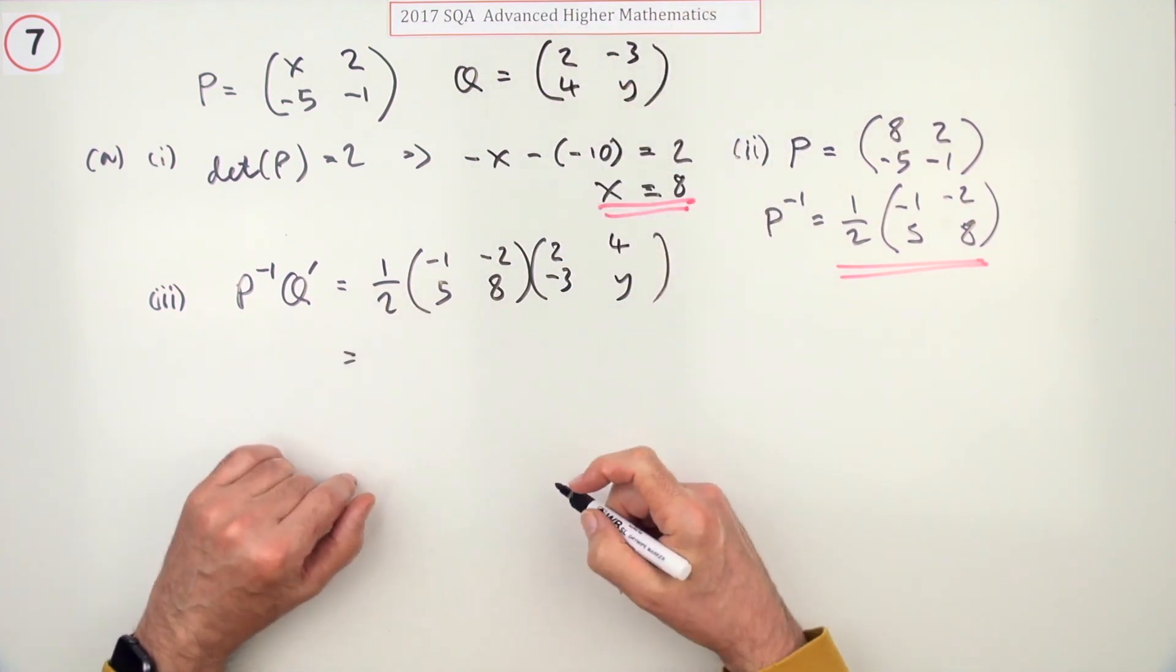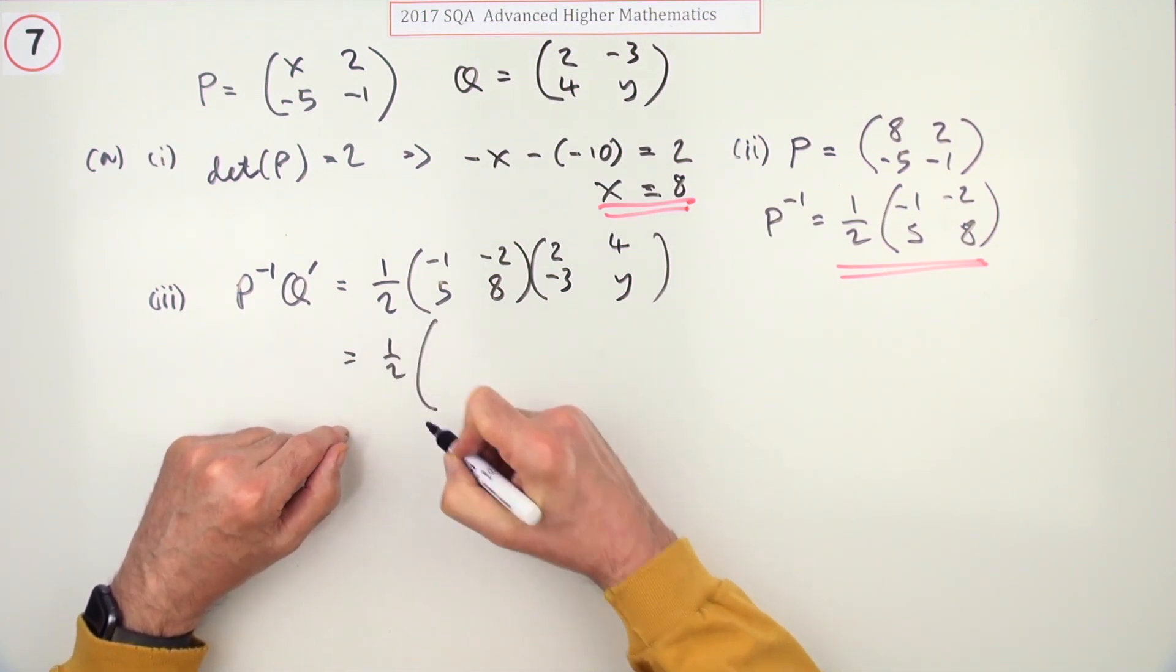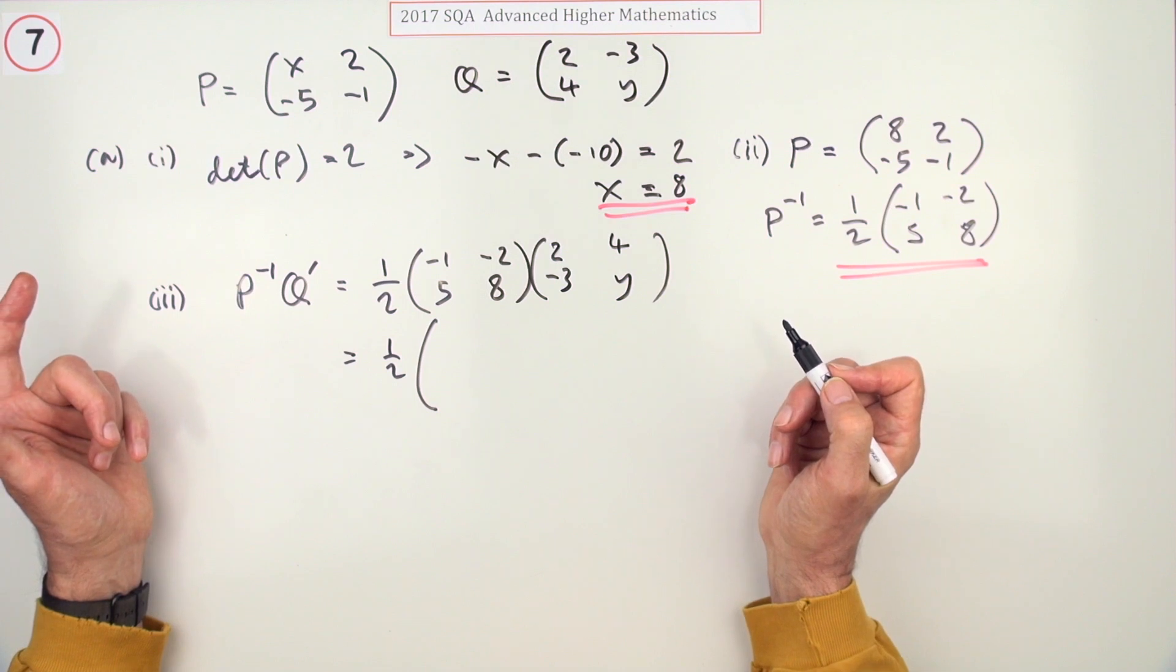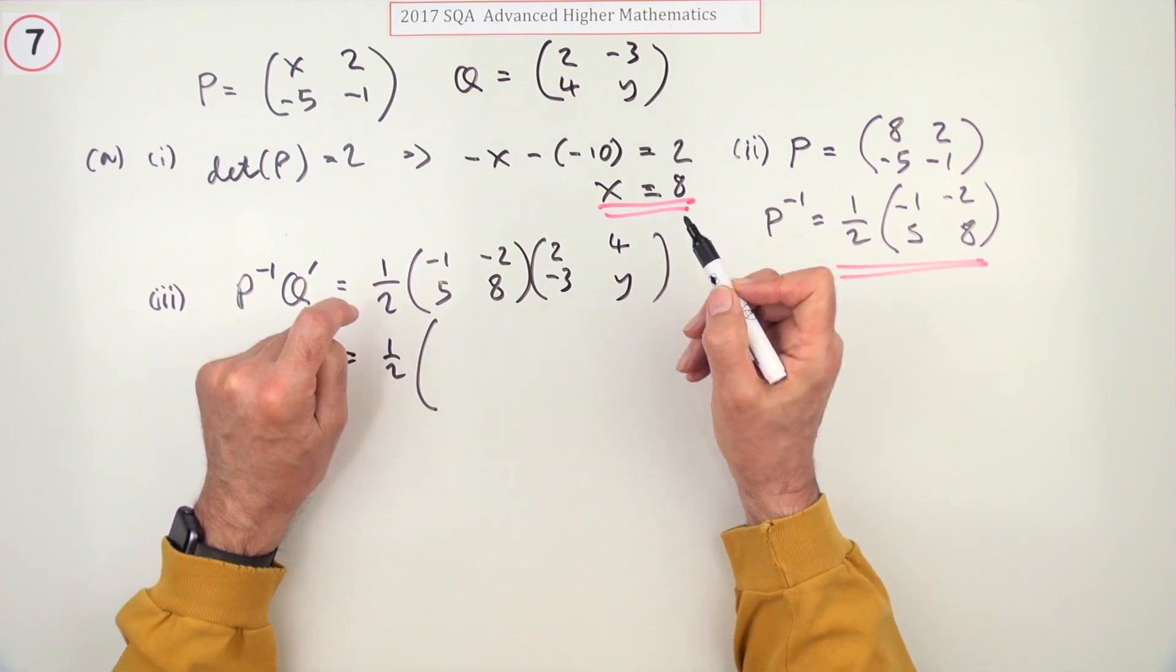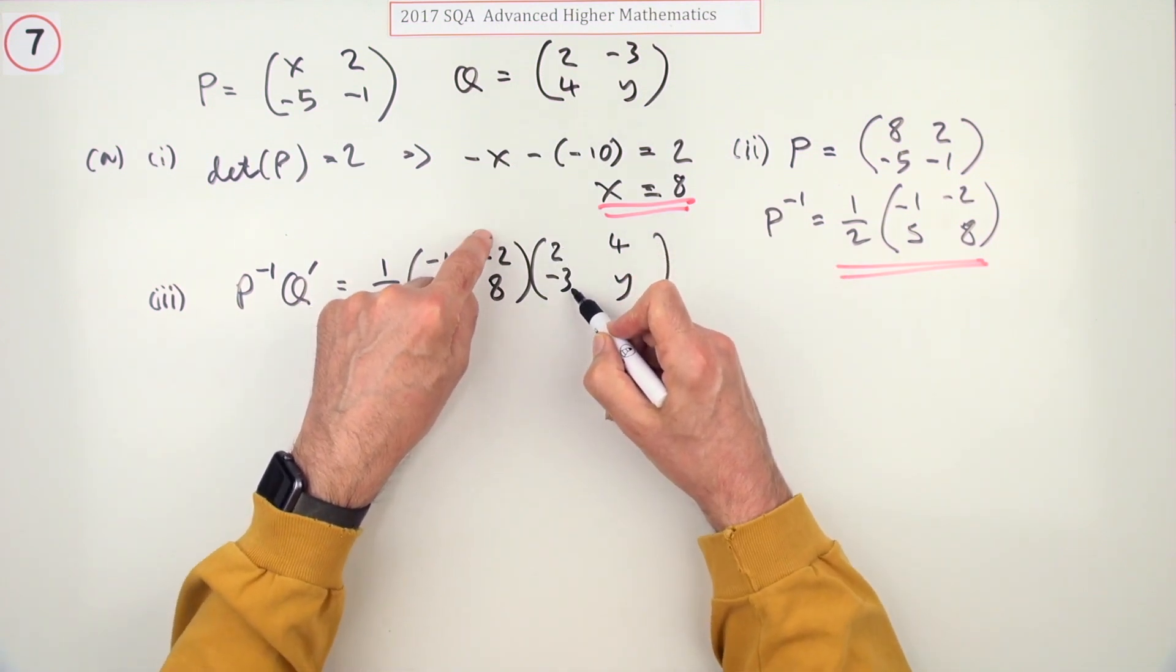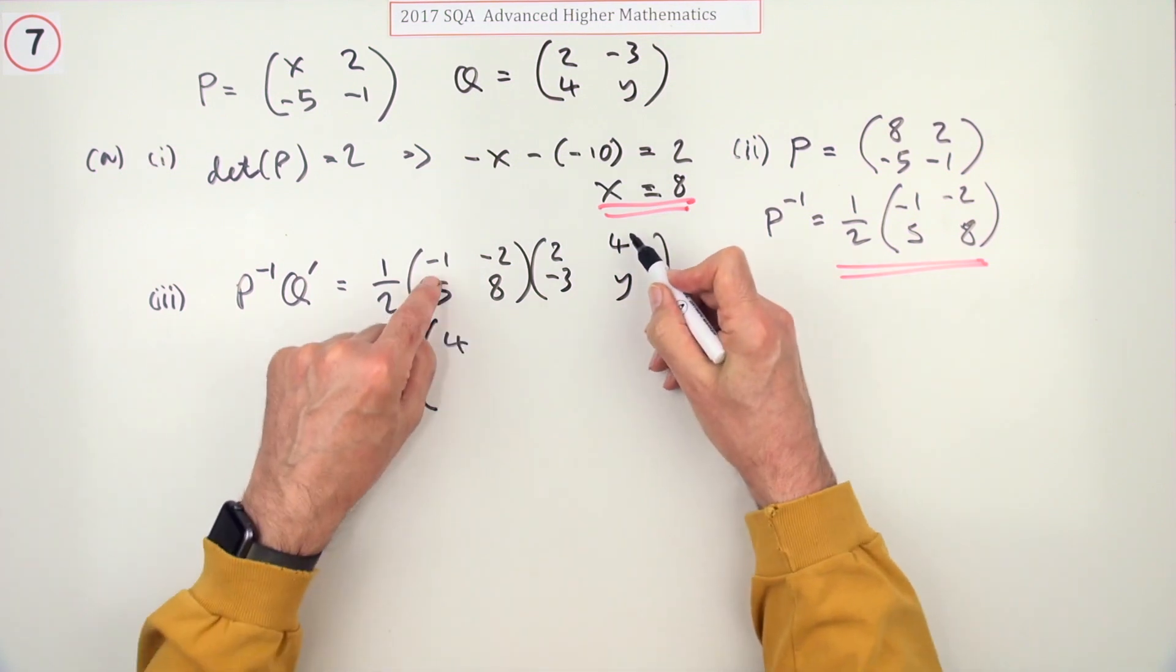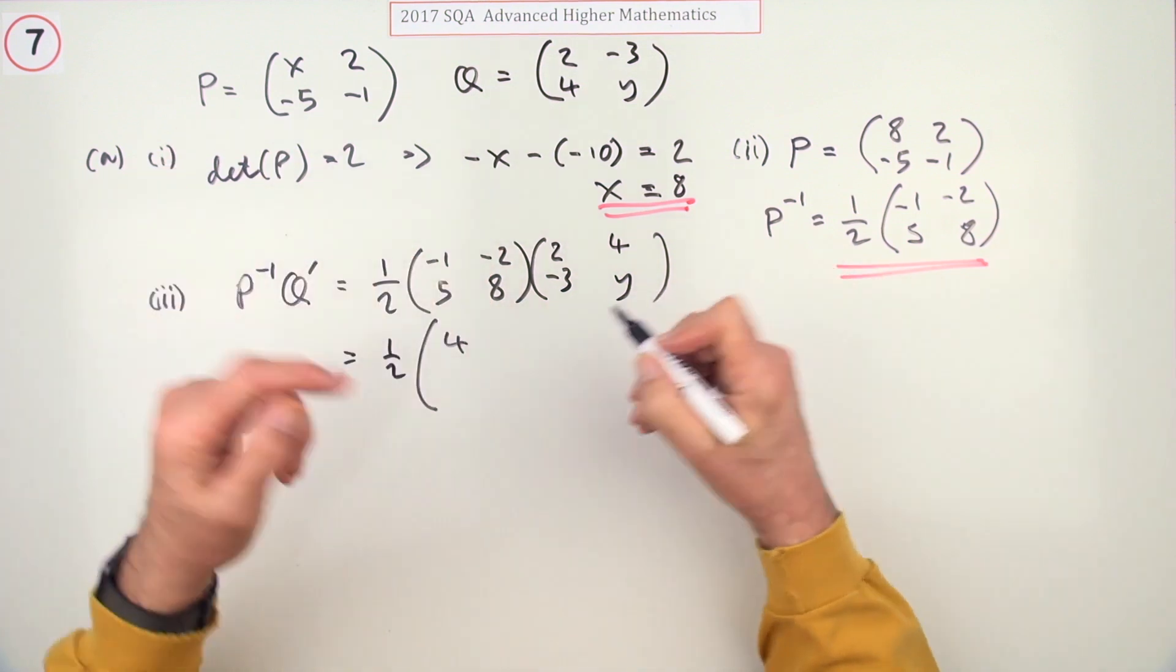Now I've got a half of, multiplying it all out. That's like the scalar product of horizontal and vertical vectors. You've got -2 + 6, so that's 4. You've got -4 - 2y, nothing you can do with that.